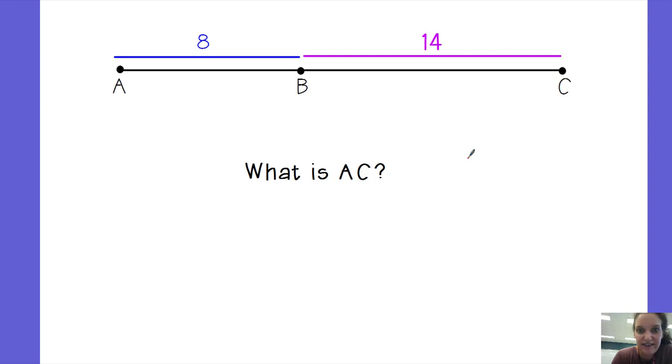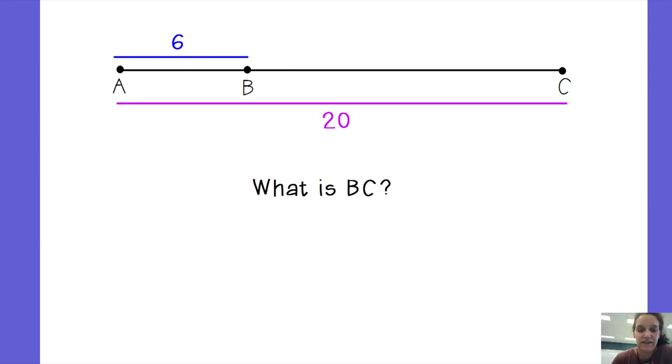8 plus 14 is 22. Next situation: I know AB is 6 and I know AC, I know the whole enchilada this time is 20. We're trying to figure out what is BC. We're trying to figure out this piece right here, this little nugget.